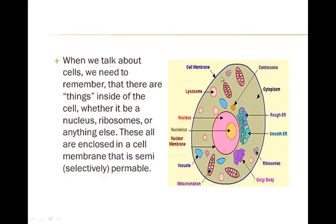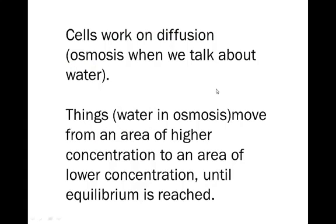When we talk about most movement between cells, most of the movement is done by either diffusion or osmosis. Osmosis refers to the movement of water, and diffusion refers to other solutes — the solid parts. What happens is things move from an area of higher concentration to an area of lower concentration until equilibrium is reached.